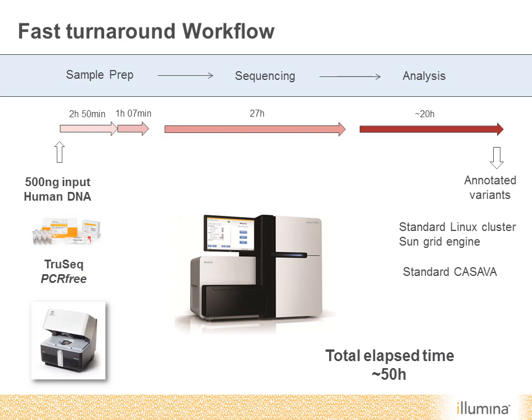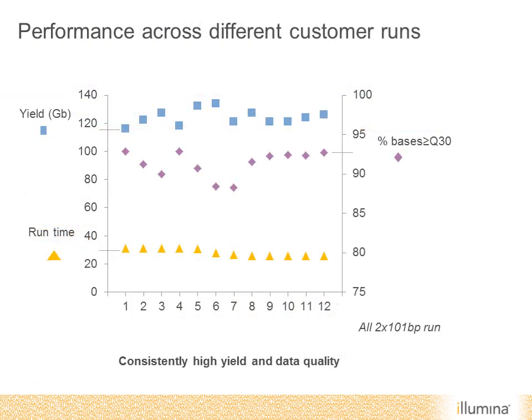The total elapsed time from sample to a completed analyzed genome is just over two days. Across a variety of different customer runs, we're getting approximately 120 gigabases of data per sample. The percentage of high-quality bases rarely dips below 90%, showing very high data quality. The runtime started at 31 hours for the first few runs and has now reached the standard spec of 27 hours, which is expected for a paired 100-base run.